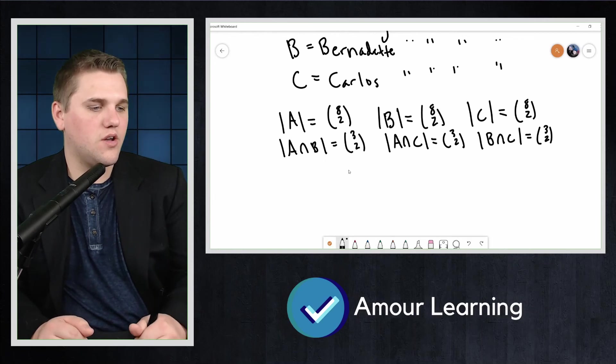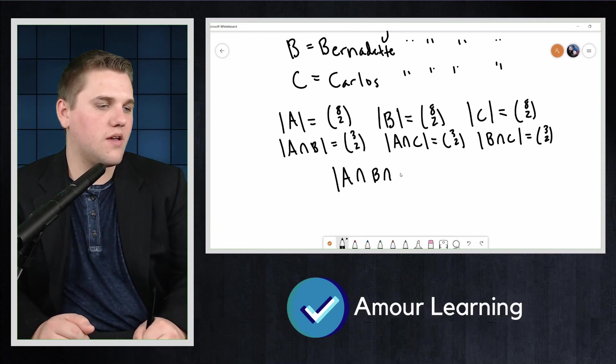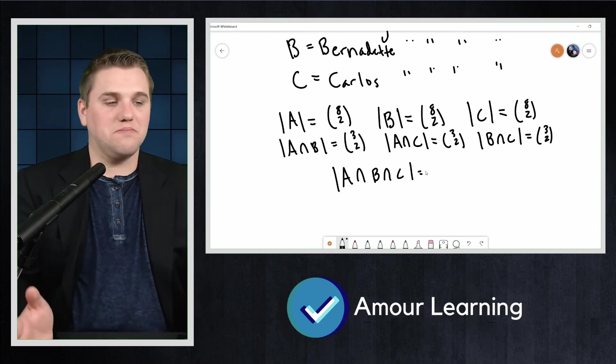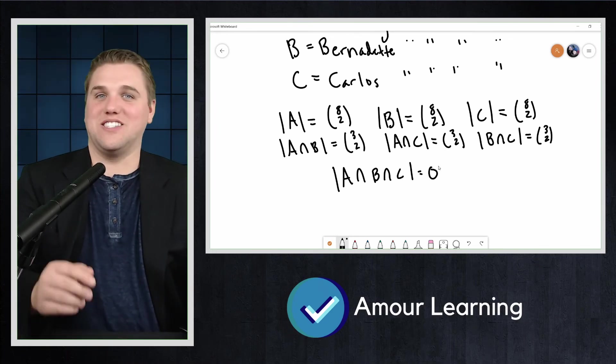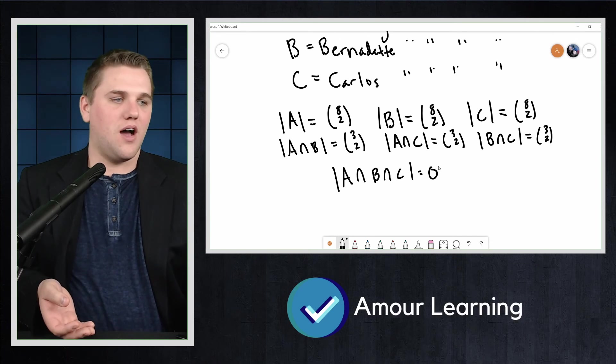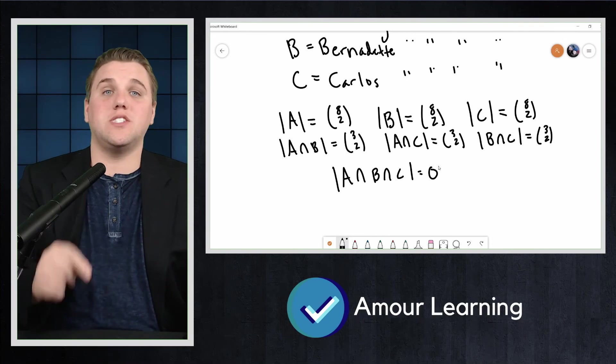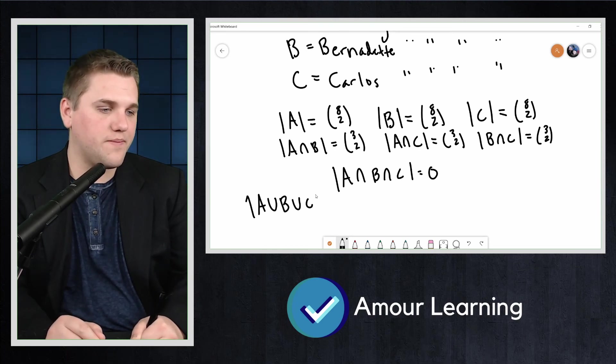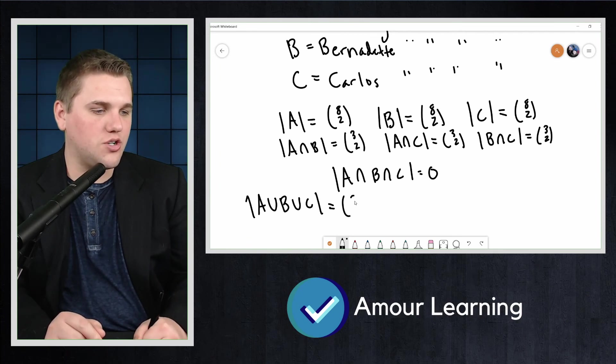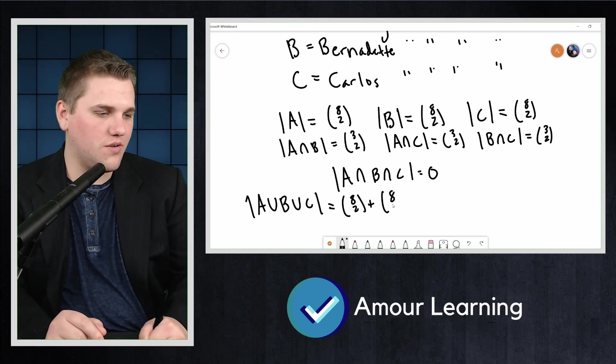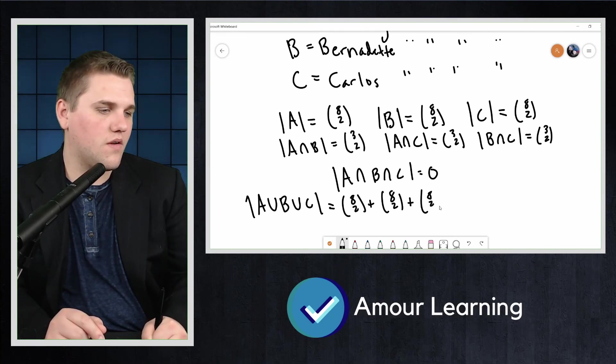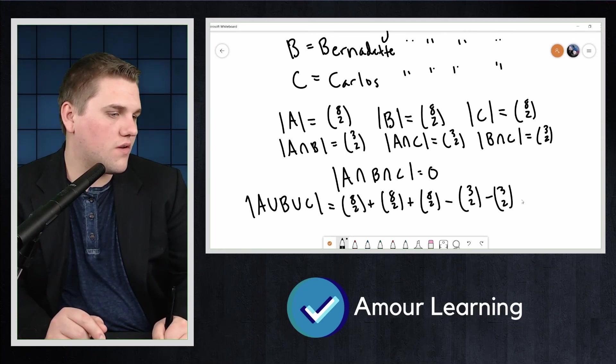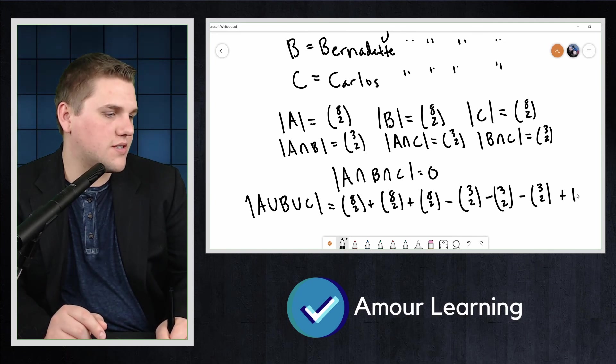Okay, and then last but not least, we need the size of A intersection B intersection C where each kid gets more than four cookies. Okay, so that's not possible because it's not possible for all three kids to get four or more cookies. Either way, combining all of these we see that the size of A union B union C is 8 choose 2 plus 8 choose 2 plus 8 choose 2 minus 3 choose 2 minus 3 choose 2 minus 3 choose 2 and then plus zero, zero, which by the way is 75.